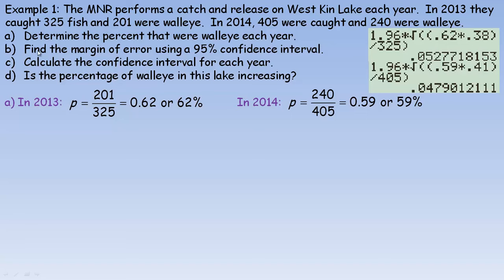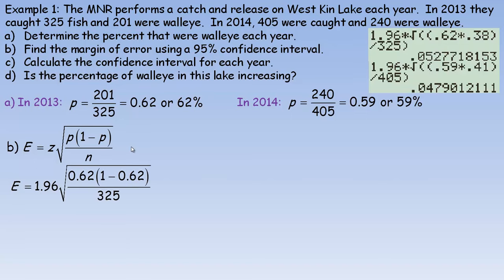In part B it says find the margin of error using a 95% confidence interval. So here's that margin of error formula from the previous page. The z-score associated with 95% is 1.96. The p value is 0.62, which goes in for p and (1 minus p), and n is 325 fish caught. So we calculate this and we get 0.053, or 5.3%.